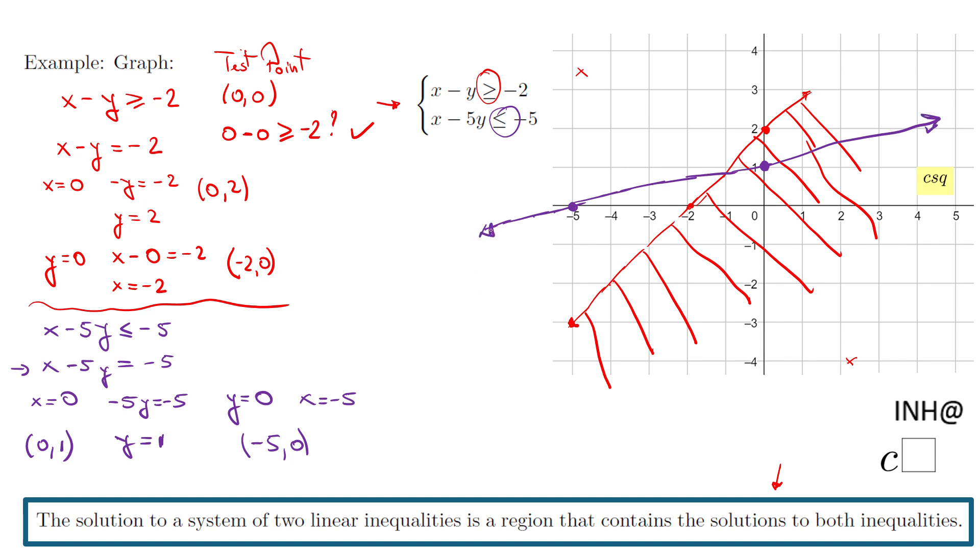And again, I have the same situation, above the line or below the line. And again, I guess I'm going to use a test point. Can I use zero and zero? Of course. And what do we get if we put in the original inequality? We have zero minus five times zero. Is that less or equals negative five?